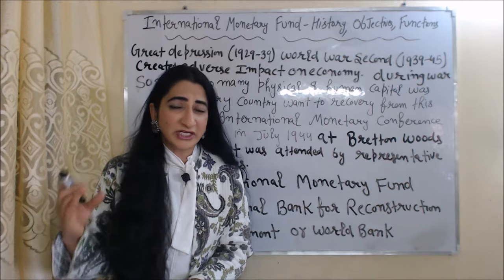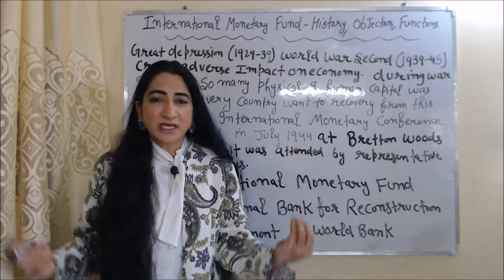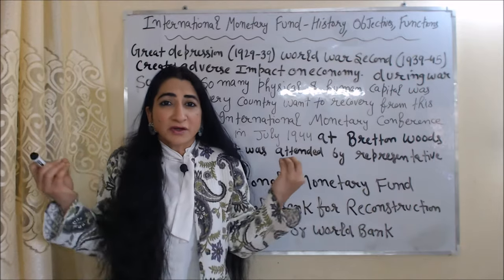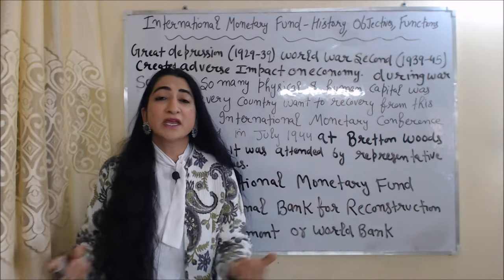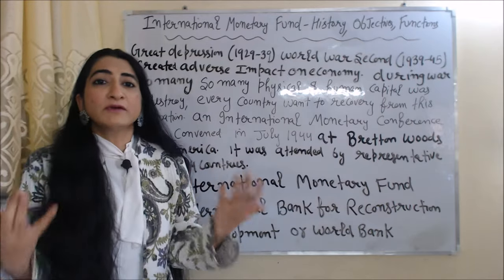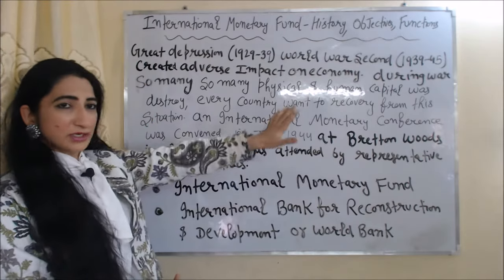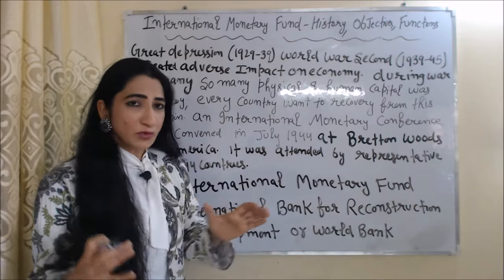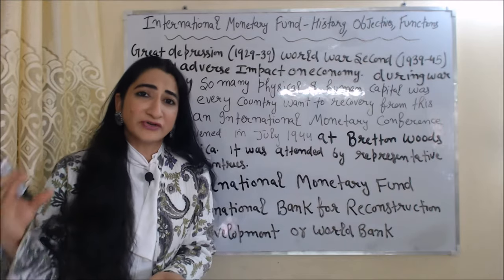As we know, the Great Depression during 1929-39 and World War II between 1939-45 created a diverse impact on our global economy, because during war so many human and physical capital was destroyed. Every country wanted to recover from this situation. That's why an International Monetary Conference was convened in July 1944 at Bretton Woods in America, and it was attended by representatives of 44 countries.